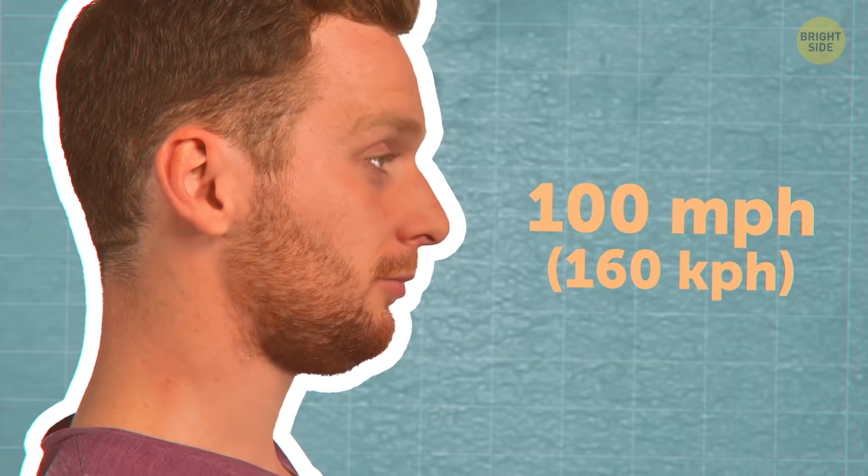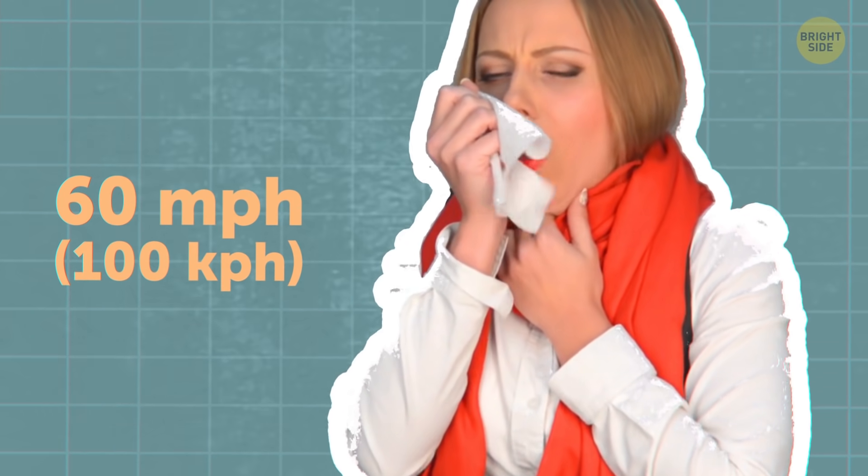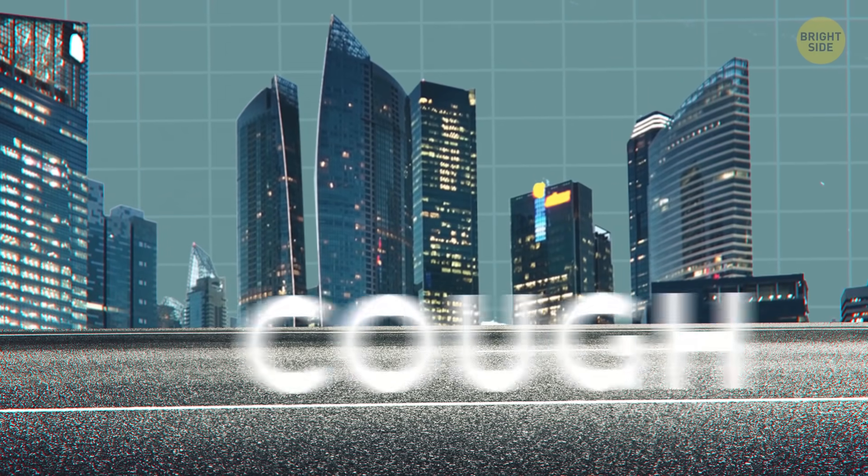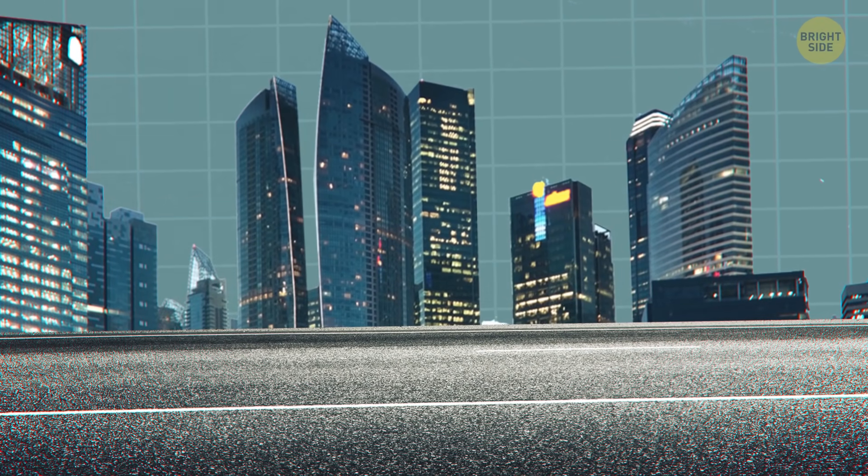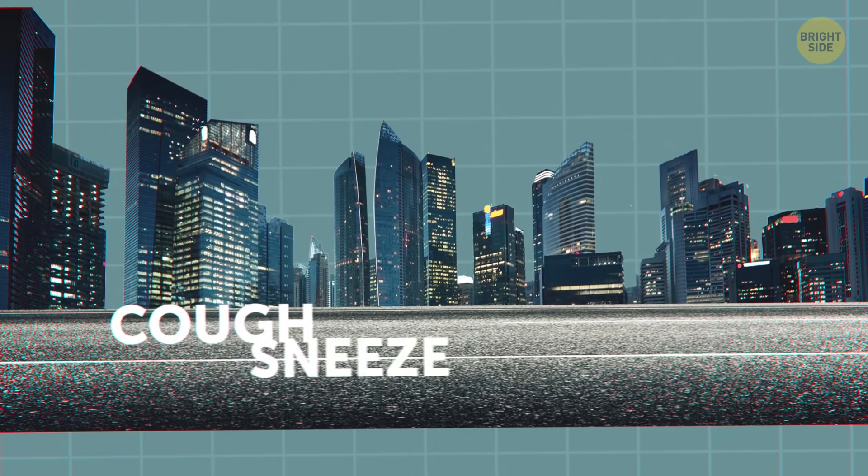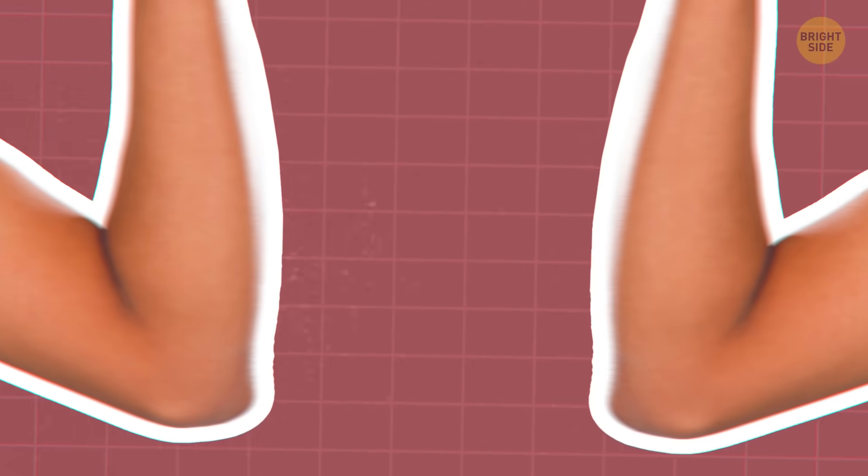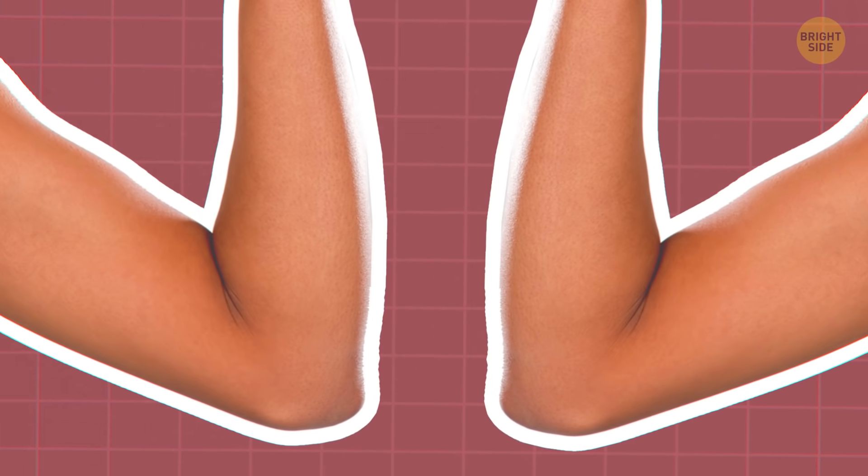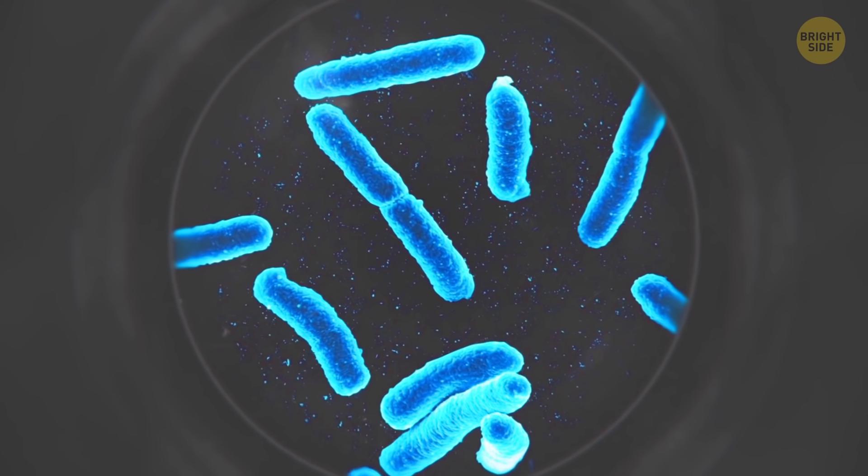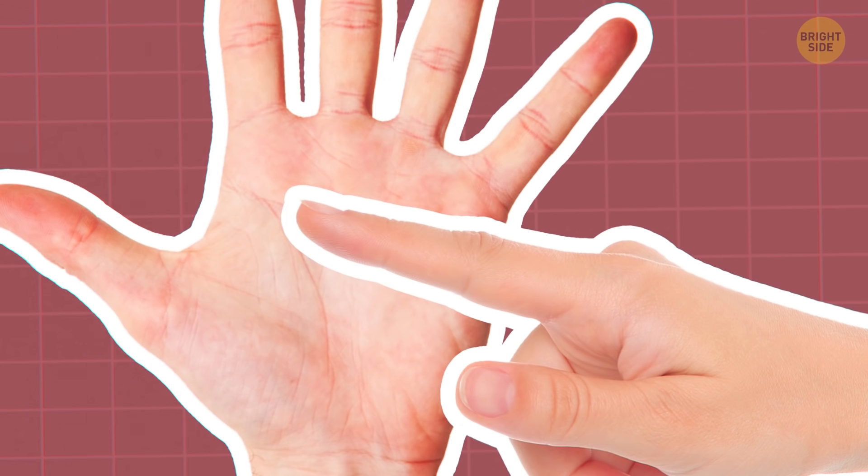Sneezing can send droplets of mucus out of the body going 100 mph. As for coughing, up to 60 mph. Now, if you don't want to spread germs, do an elbow bump instead of a handshake. Experts found that it spreads fewer germs. Even better, don't touch hands at all. They spread bacteria the most.